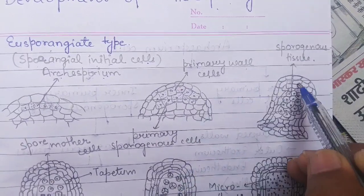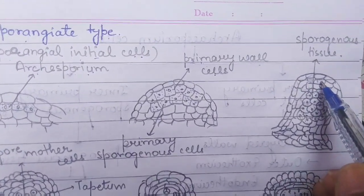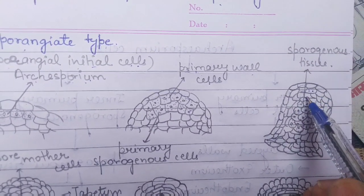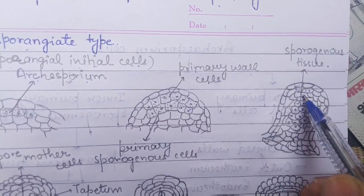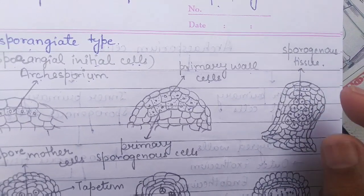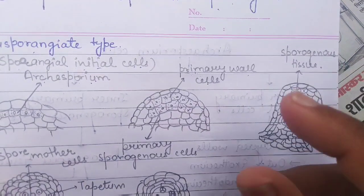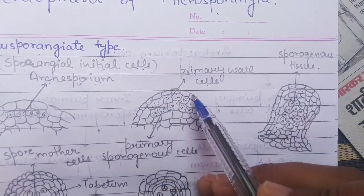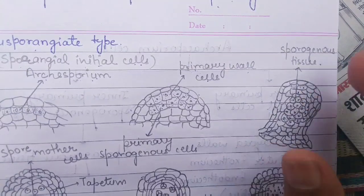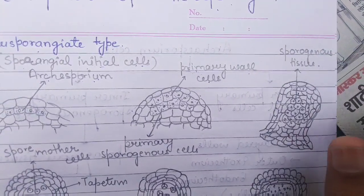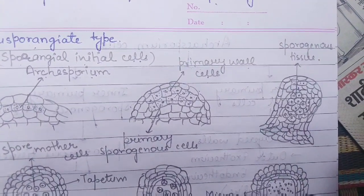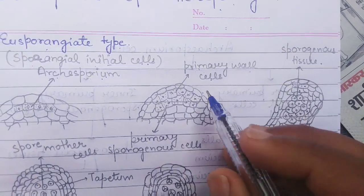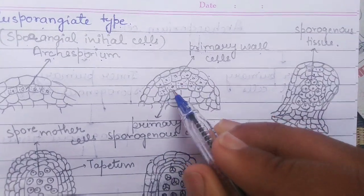The outer layer of this wall region is called the exothecium, while the inner wall is called the endothecium. The exothecium is thin-walled and cutinized, while the inner endothecium is also thin-walled. So the primary wall cells form layers — the outer exothecium and the inner endothecium present beneath the epidermis — and their function is to provide protection to the Microsporangia, acting as a protective wall.